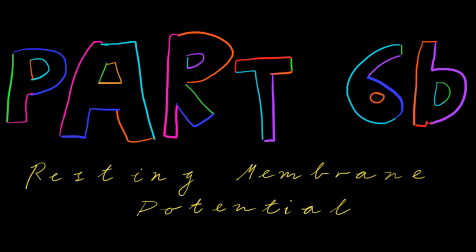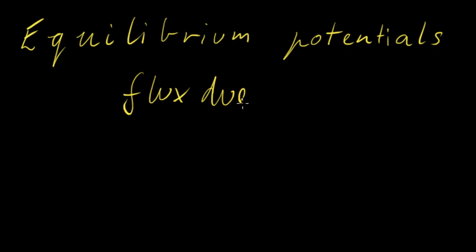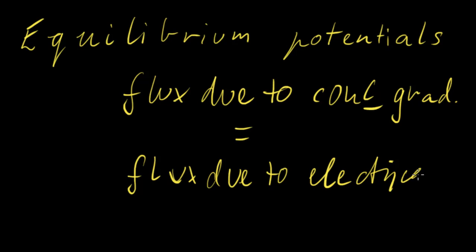Hi, my name's Tom. Welcome to Part 6b, Resting Membrane Potential. This is a continuation of Part 6a — hopefully you've watched it. Just to recap, the last thing we were talking about was equilibrium potentials of ions. The equilibrium potential of an ion is reached when the flux due to concentration gradient is equal to, but opposite in direction to, the flux due to electrical gradient. Sorry for the forehand writing — that's just where we were up to in the last video.